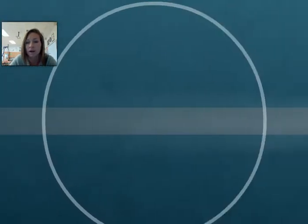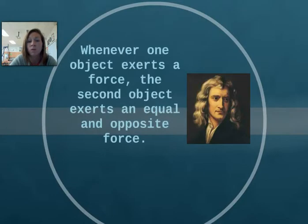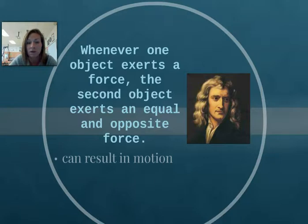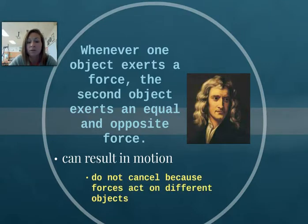Newton actually phrased this as, whenever one object exerts a force, the second object exerts an equal and opposite force. This can result in motion, and many times it does, although there are times where there will not be motion. It's important to remember that just because we have forces in equal and opposite directions, it does not mean that they cancel, because forces act on different objects.